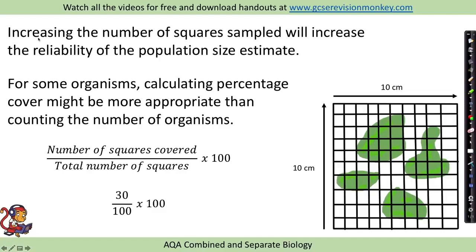A couple of key points then. Increasing the number of squares sampled will increase the reliability of the population size estimate. They may use the word reliability or they may use the word accuracy, but the more quadrats that you put down on that field, the more reliable your estimate is going to be.